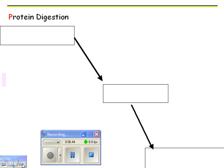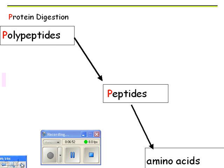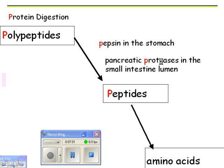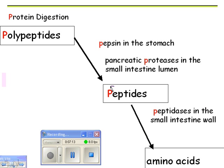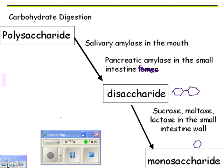Protein digestion: polypeptides are broken down into smaller peptides, then down to amino acids. It starts in the stomach with an enzyme called pepsin, then continues in the small intestine with pancreatic proteases. The final step uses peptidases — enzymes that break peptides all the way down to amino acids. This last product, amino acids, is what gets absorbed into the blood.